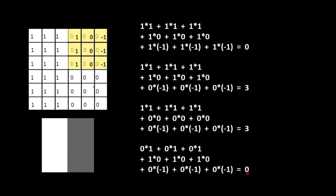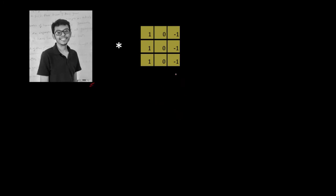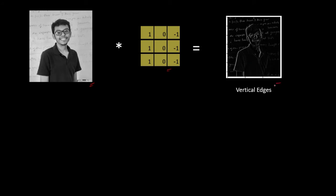So the convolution of this image with this filter produces this matrix, which can be treated as an image after proper rescaling — 0 as the darker side and 3 as the whiter side of the spectrum. The final image shows an edge at the center, identifying the edge present in the original image. A practical application: convolving a real-world image with this exact filter produces a resultant output that clearly highlights all the vertical edges. Thus, a convolution operation acts as a feature or edge detector in CNN.